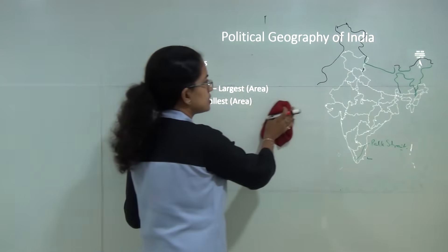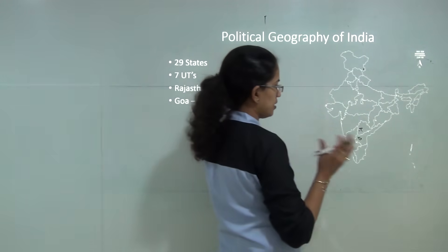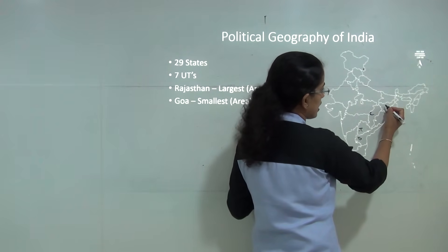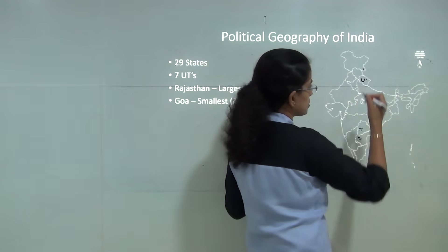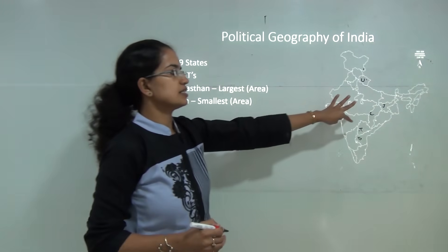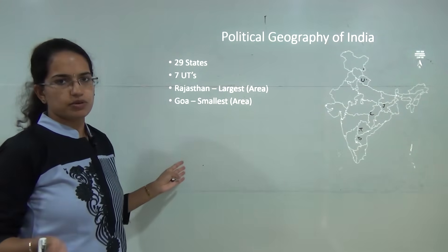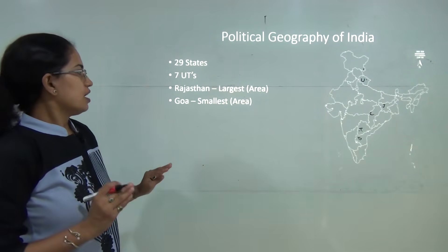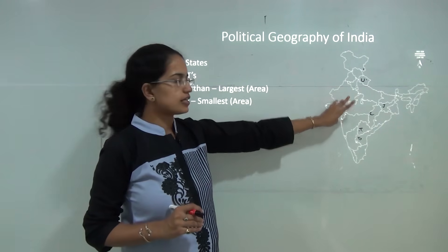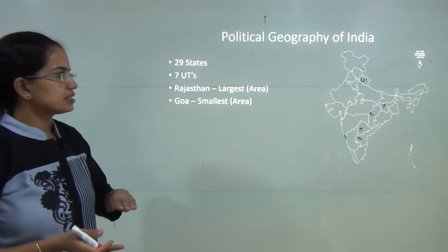As of now, India has 29 states. The most recent additions were in 2000 when three new states were formed: Chhattisgarh from Madhya Pradesh, Jharkhand from Bihar, and Uttarakhand from Uttar Pradesh. India has seven union territories. Rajasthan is the largest state by area, and Goa is the smallest state by area.